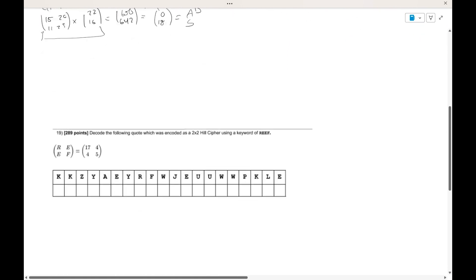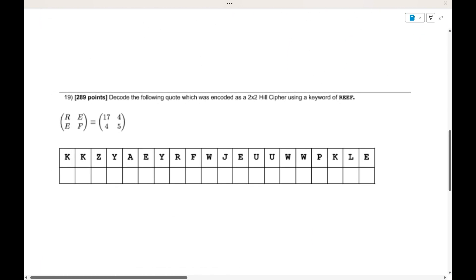So as usual, here is a practice question. Here it tells you that you have the keyword of reef, and this is the matrix that you found. And so once again, you just need to find the inverse of this, and then multiply it by each pair of two. So go ahead and pause this video right here and try this cipher all on your own.